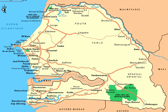Greetings my friends. This is a map of Senegal. Senegal is located on the west of the African continent. Senegal is externally bounded by the Atlantic Ocean to the west, Mauritania to the north, Mali to the east, and Guinea and Guinea-Bissau to the south.